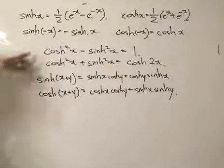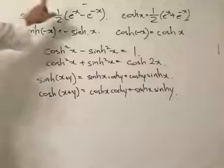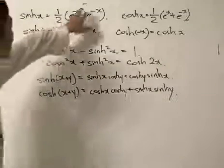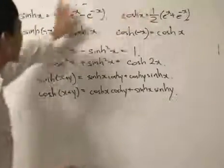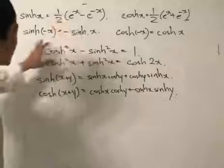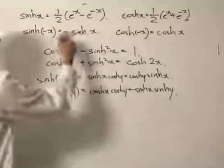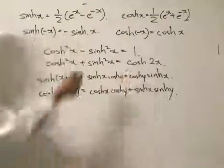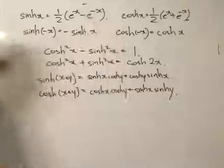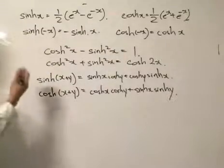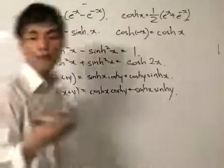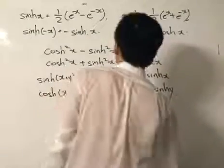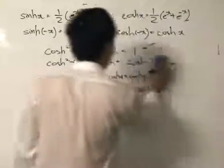Most of these can be proven using the basic definitions. When we use the basic definitions, we can square them and do the algebra. The identity cosh²x minus sinh²x = 1 is easy to prove — you just square each term and subtract. The more important identity in terms of understanding this function is cosh²x minus sinh²x = 1, which we will analyze now and compare to the unit circle.